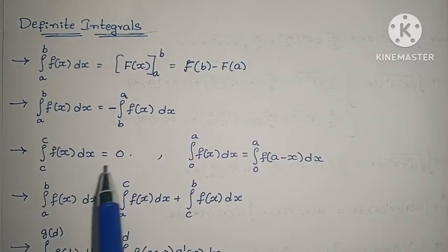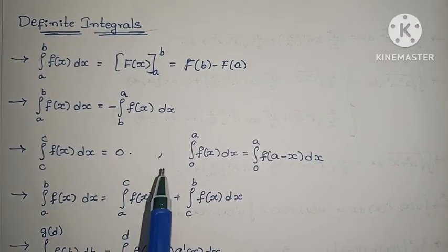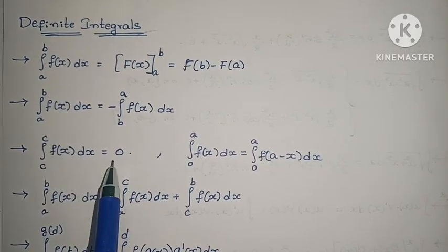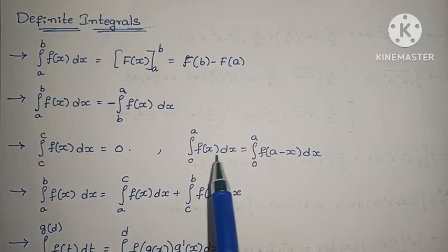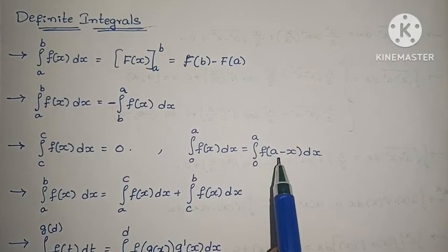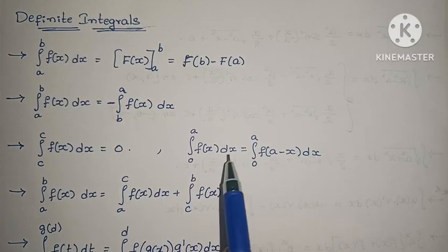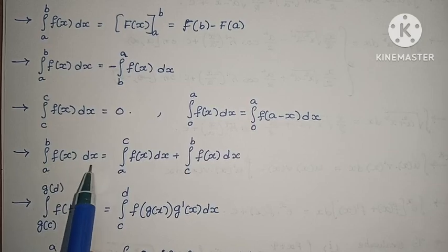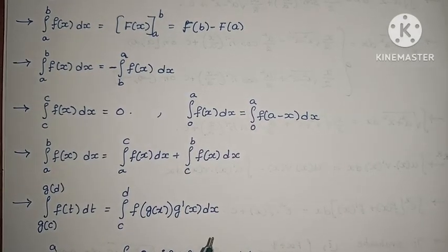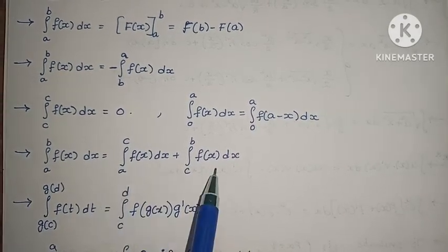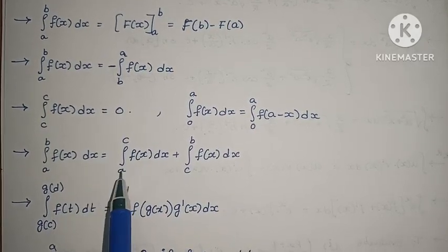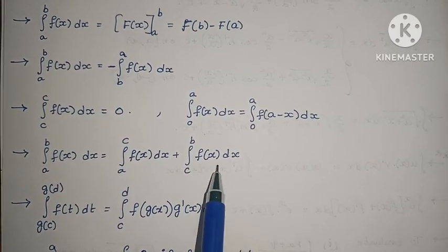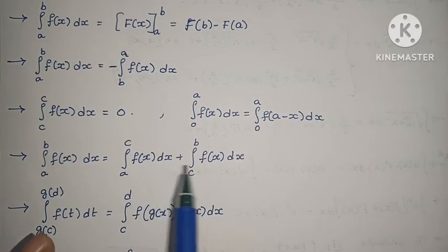Property: Upper limit and lower limit same means value is zero. Integral a to b of f(x) dx can be split as integral a to c of f(x) dx plus integral c to b of f(x) dx, where c is between a and b — the upper limit of the first part must equal the lower limit of the next part. Substitution property: Integral g(c) to g(d) of f(t) dt equals integral c to d of f(g(x)) times g'(x) dx.